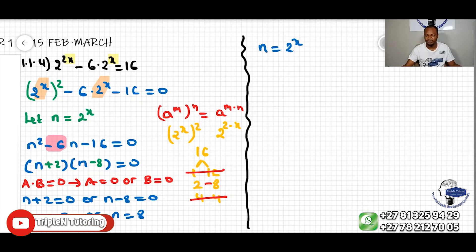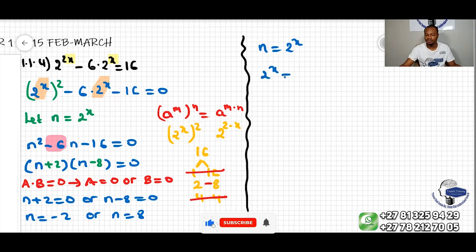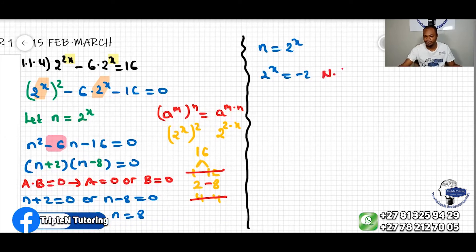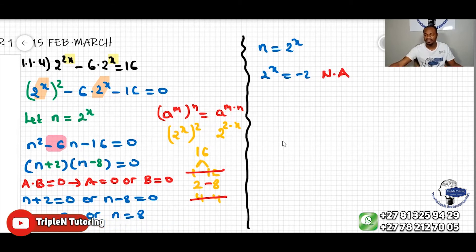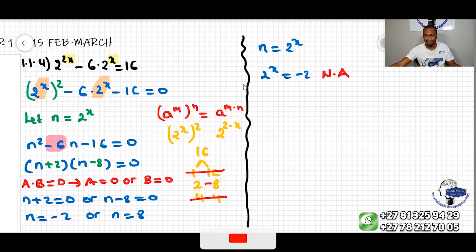Now we can substitute the values. So this means 2 to the x equal to negative 2. And obviously, this is not applicable, because 2 to the power of x will never be negative. No exponents here will make a negative answer. It will always be positive. So this is not applicable. We stop there.